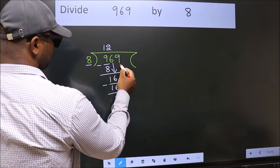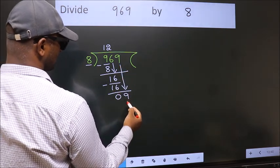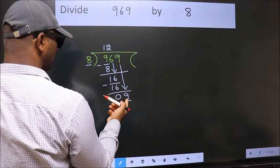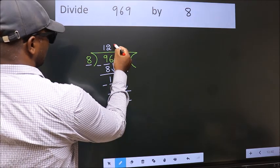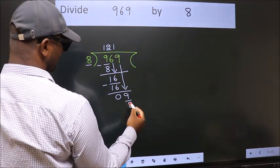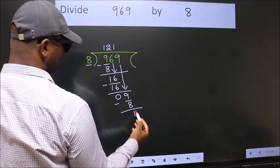After this, bring down the beside number. So, 9 down. So, 9. A number close to 9 in 8 table is 8 once 8. Now, we subtract. We get 1.